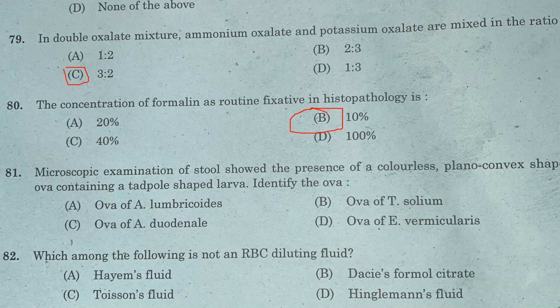Question 81: Microscopic examination of stool showed the presence of a colorless plano-convex shaped ova containing a tadpole-shaped larva. Identify the ova. Option A: ova of Ascaris lumbricoides. Option B: ova of Taenia solium. Option C: ova of Ankylostoma duodenale. Option D: ova of Enterobius vermicularis. Answer is Option D, ova of Enterobius vermicularis.